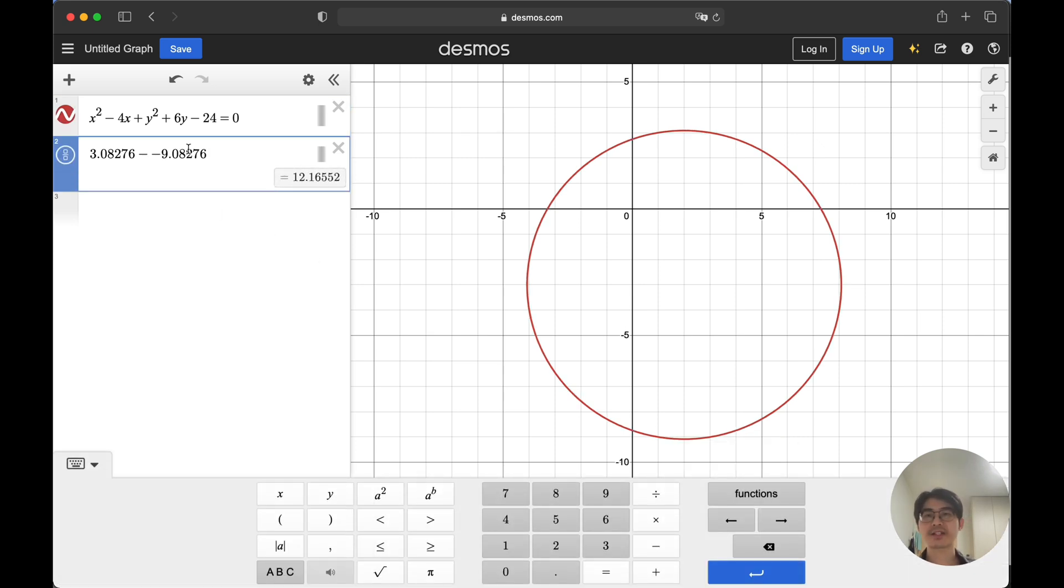Okay, we get 12.16552. That's the length for the diameter. So if we divide it by two, then that would be the radius, right?